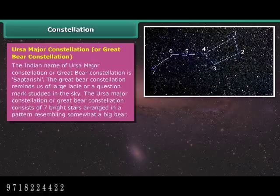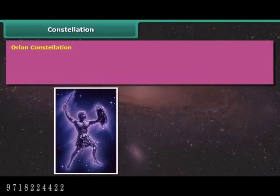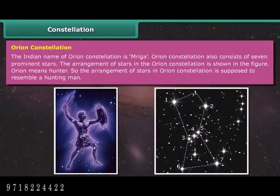The Great Bear constellation reminds us of a large ladle or a question mark studded in the sky. It consists of seven bright stars arranged in a pattern resembling a big bear. The constellation Ursa Minor, or small dipper, also has seven stars, and the pole star forms the handle tip of Ursa Minor. The Orion constellation, known in India as Mriga, also consists of seven prominent stars arranged to resemble a hunting man.